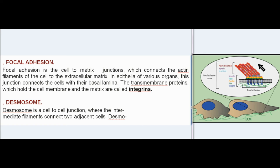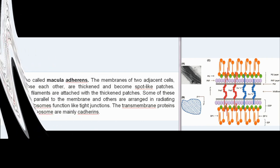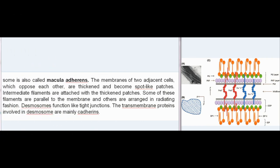Desmosome: A desmosome is a cell-to-cell junction where intermediate filaments connect two adjacent cells. Desmosome is also called macula adherens. The membranes of two adjacent cells which oppose each other are thickened and become spot-like patches. Intermediate filaments are attached with the thickened patches; some of these filaments are parallel to the membrane and others are arranged in a radiating fashion. Desmosomes function like tight junctions, and the transmembrane proteins involved are mainly cadherins.